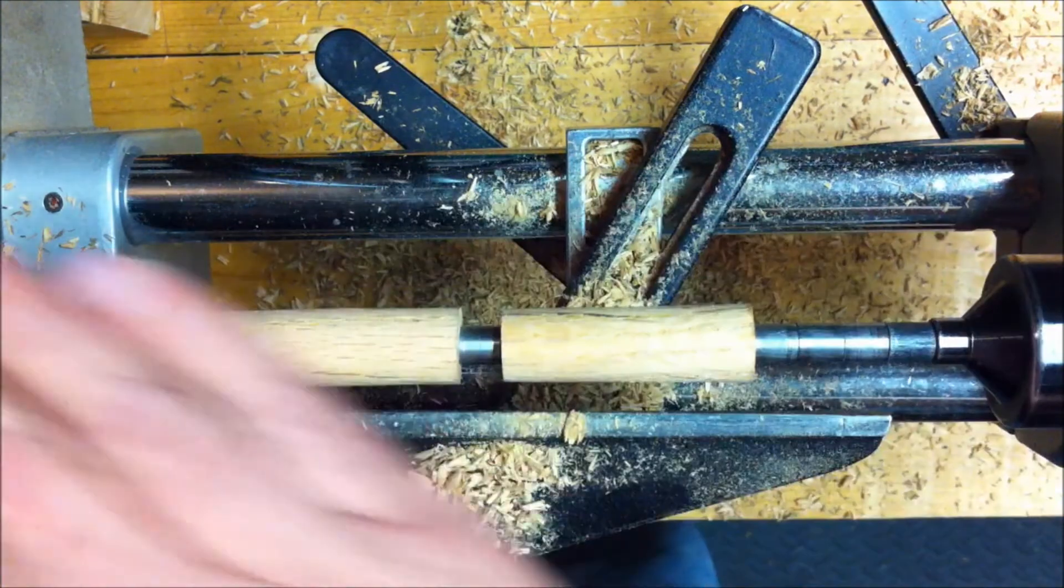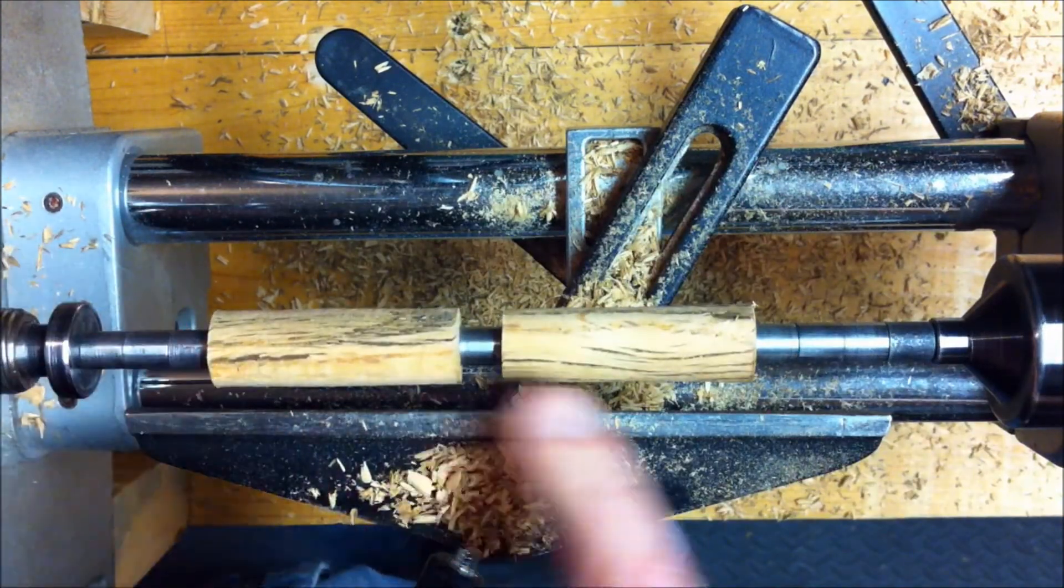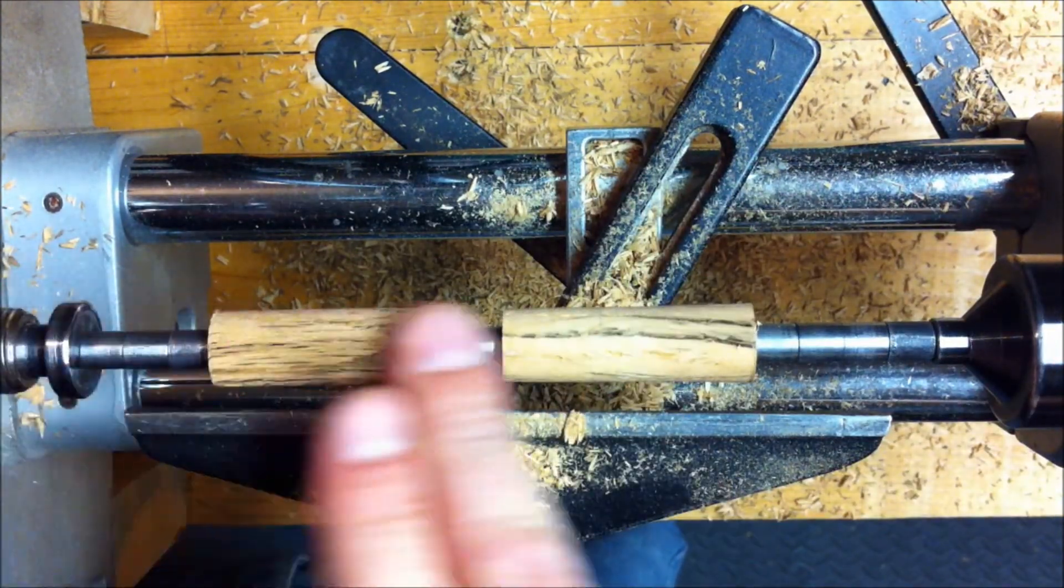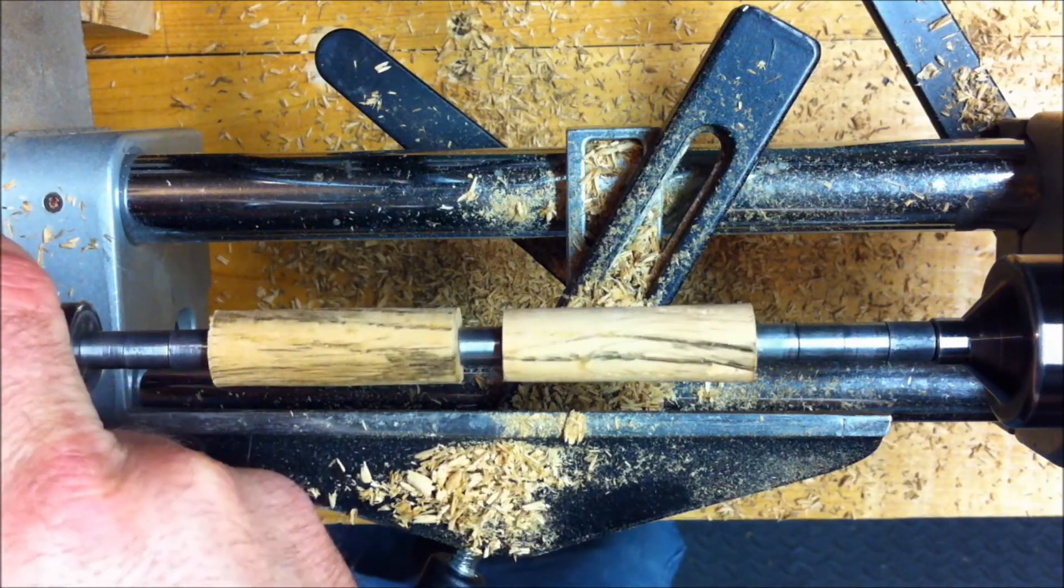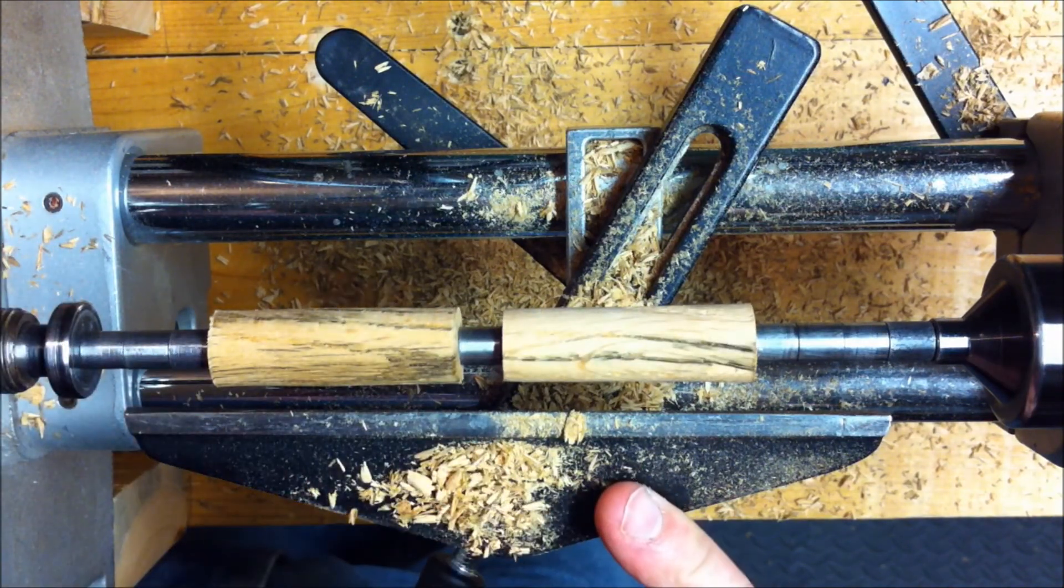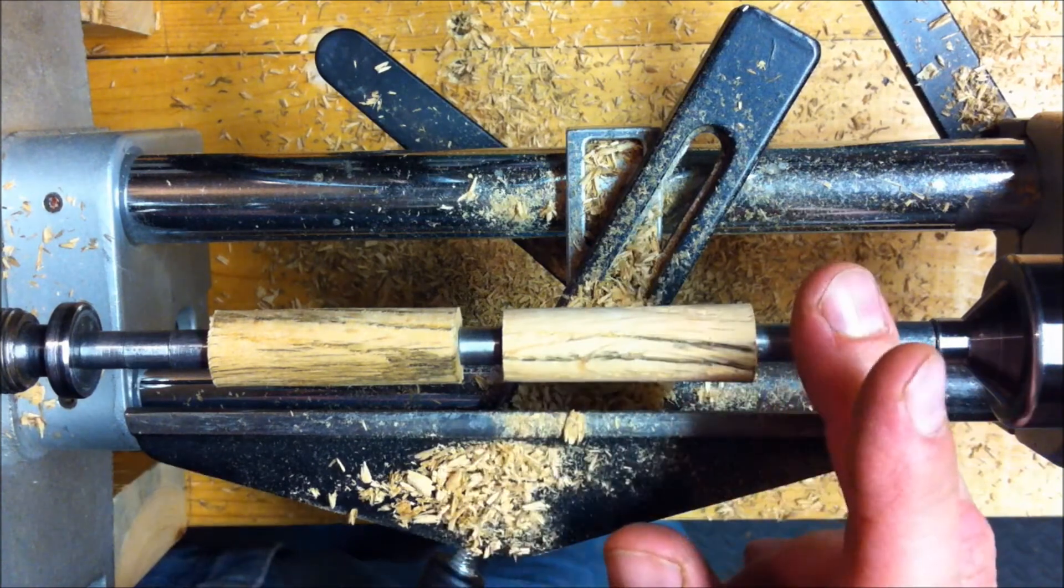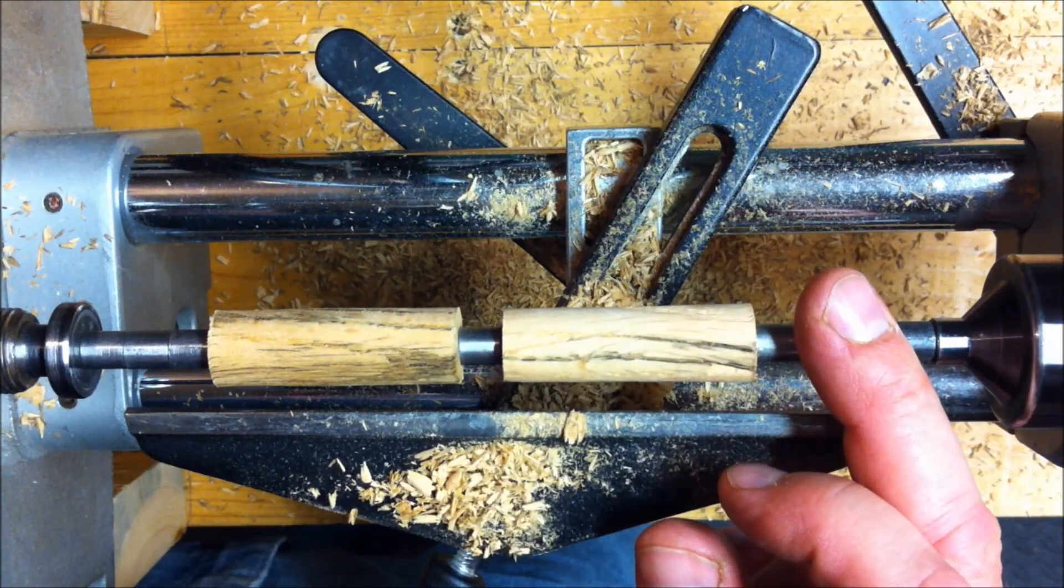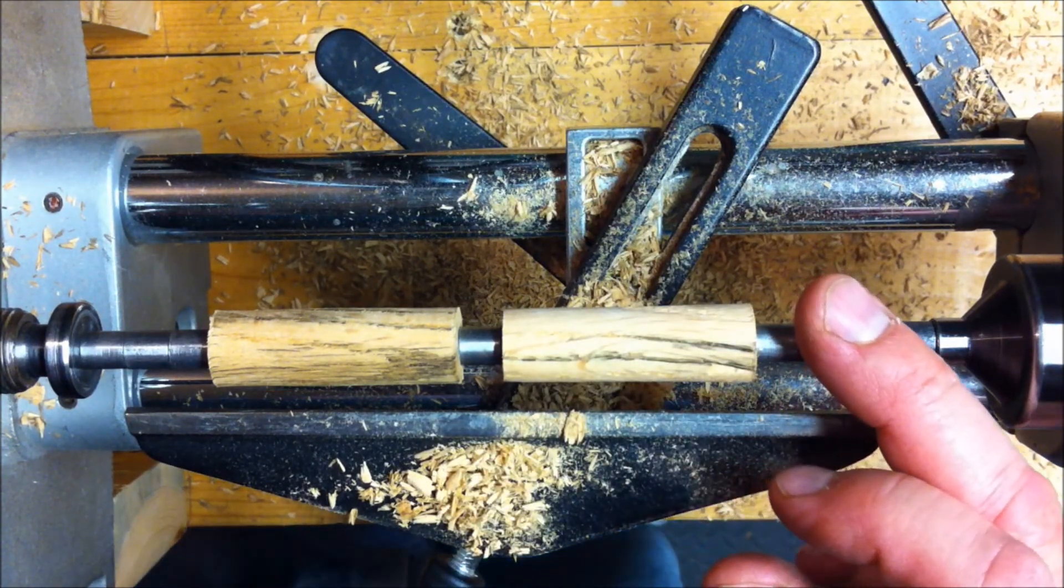Alright, the blanks are trued up. Wow, look at that grain. It looks like we got a little spalting almost, I don't know if that's spalting or just weathering, it's probably weathering. I'm going to take a second, get my tool rest adjusted a little closer to the blanks and get my smaller spindle gouge and continue on.